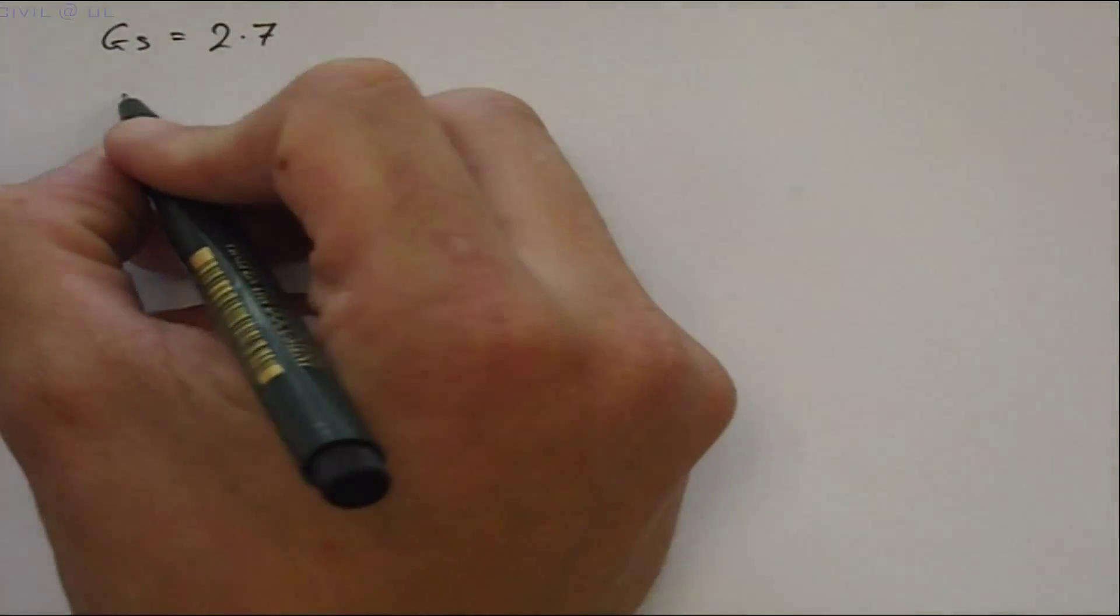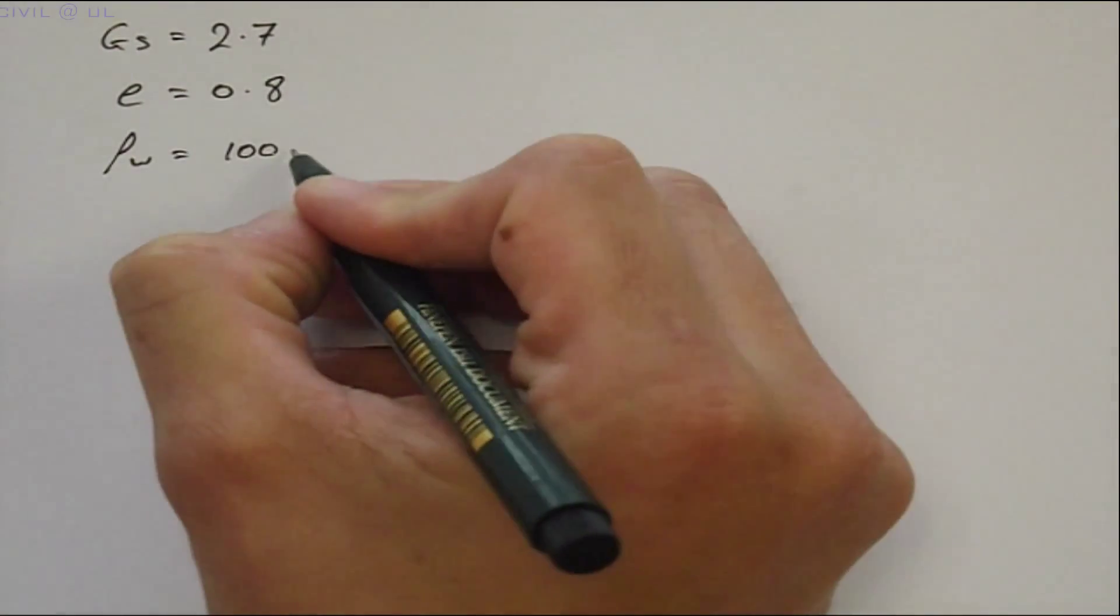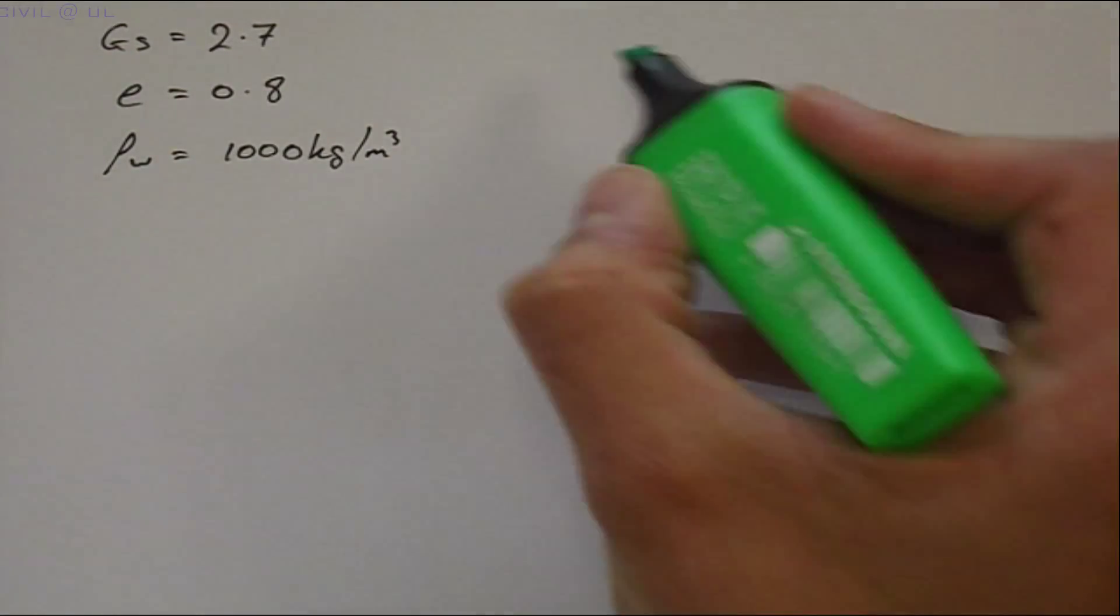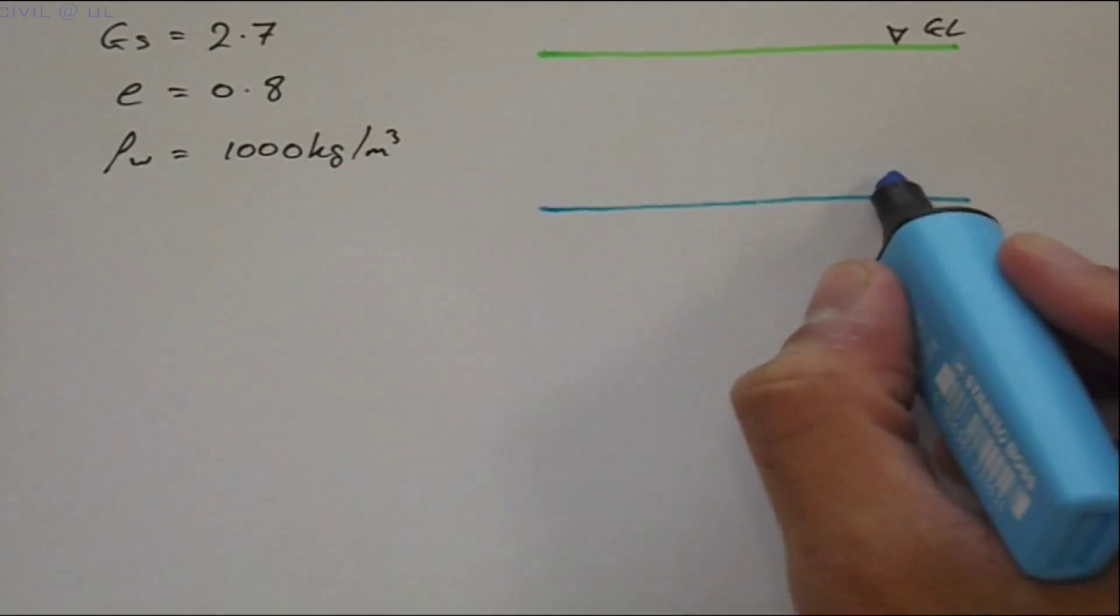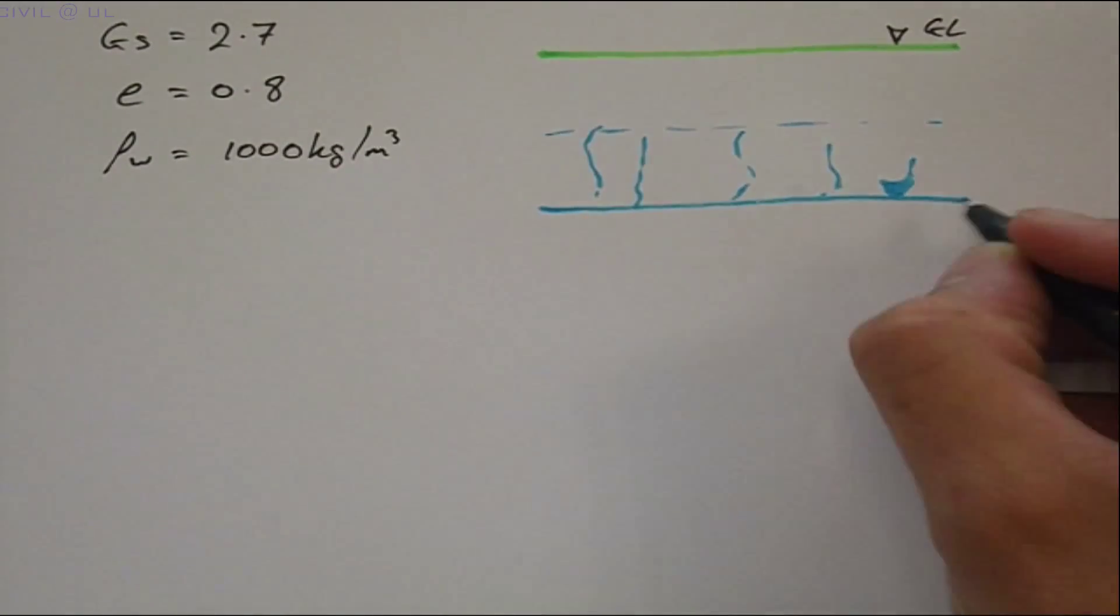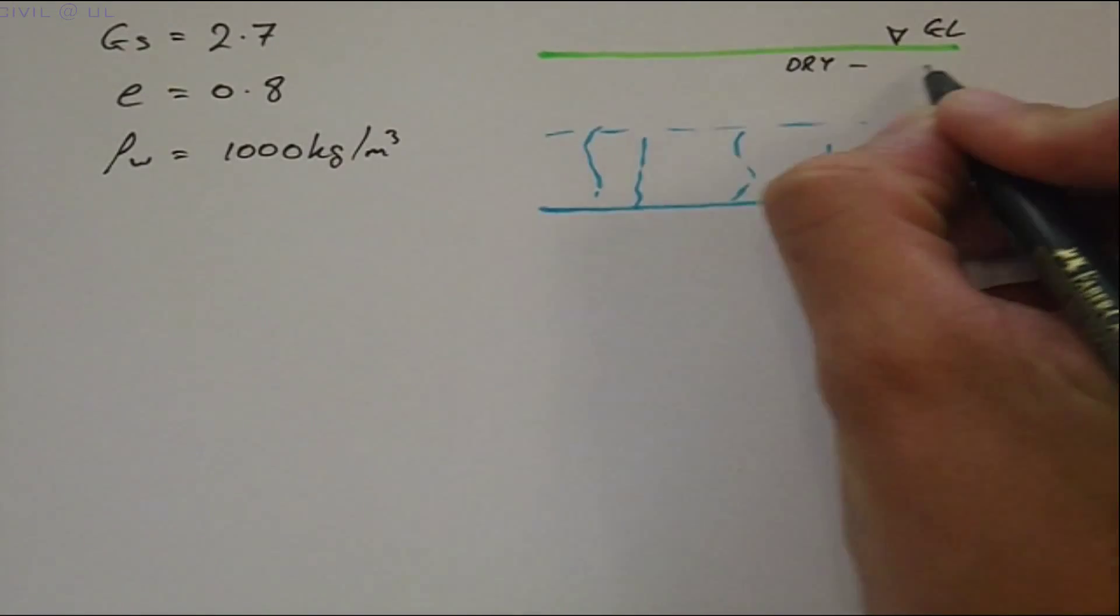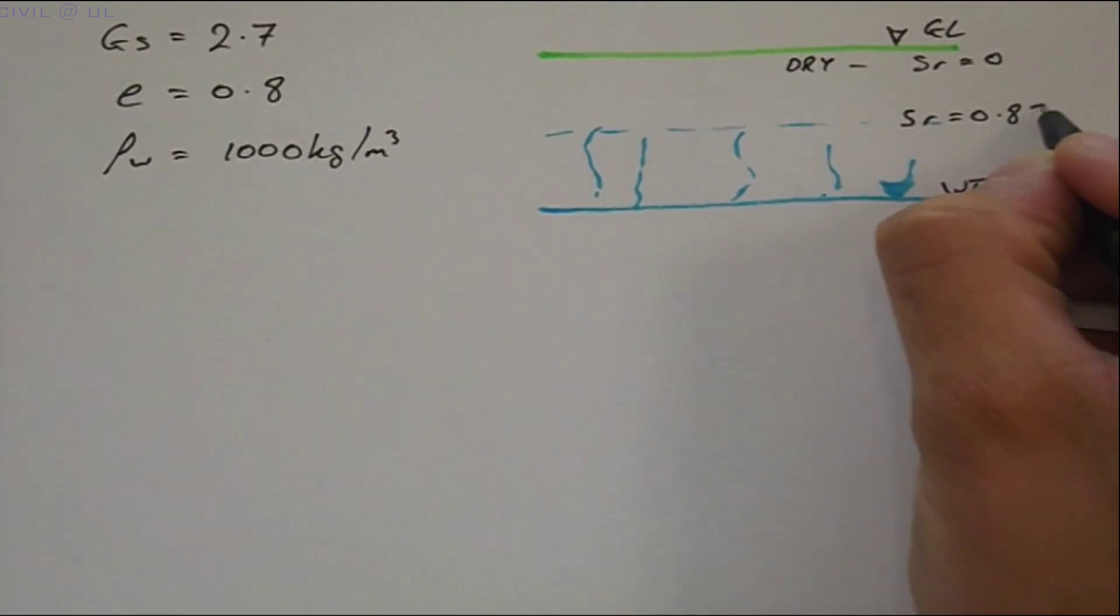To conclude, let's use these expressions to determine each density if the following soil properties were determined from lab tests on core samples. Before we start, ask yourself what values should we expect, and which density will be the greatest, and which will be the smallest.